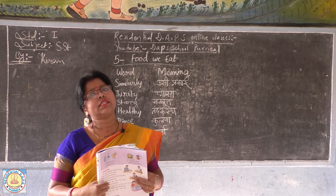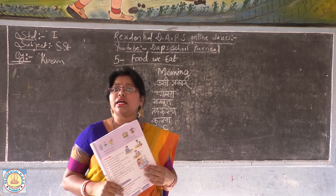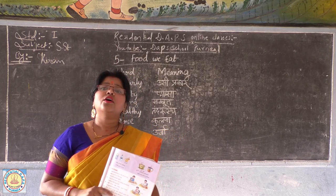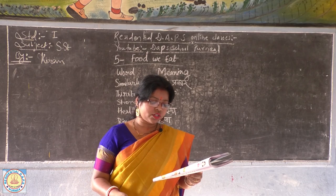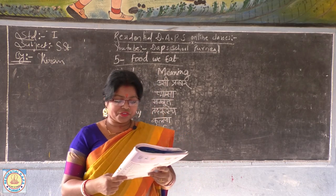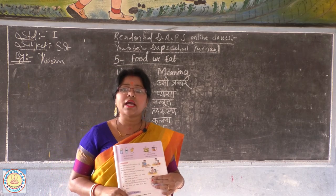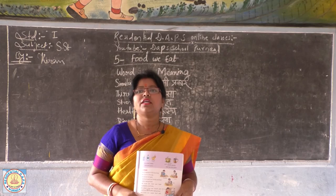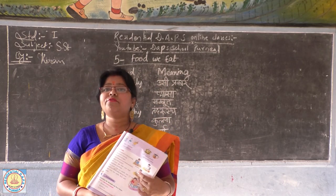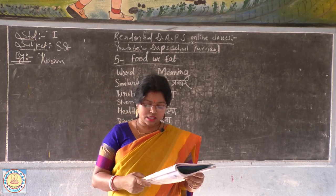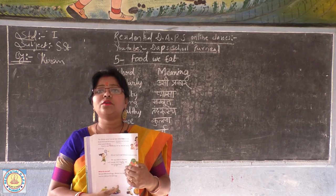We eat a lot of different things. We eat rice, daal and roti. We eat fish and eggs. We eat vegetables and fruits. We eat bread, butter and sweets.